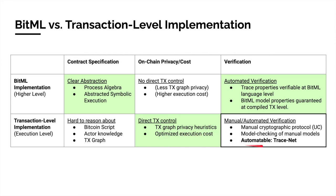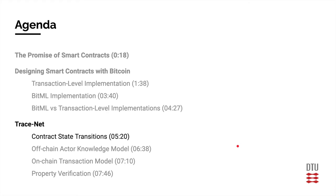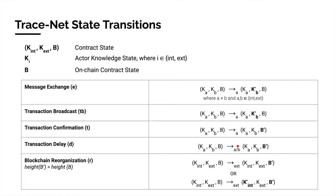However, verification of properties at the transaction level thus far has been mostly manual. The goal of Tracenet is therefore to introduce a method which is automatable. In Tracenet, we model the contract state as the tuple of the internal actor's knowledge, the knowledge of the external actor, and the on-chain contract state B.